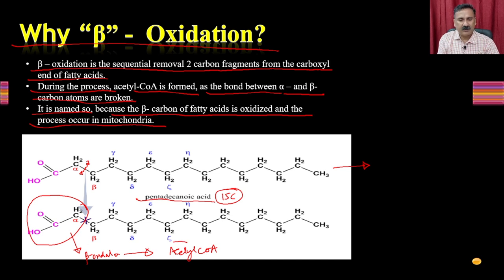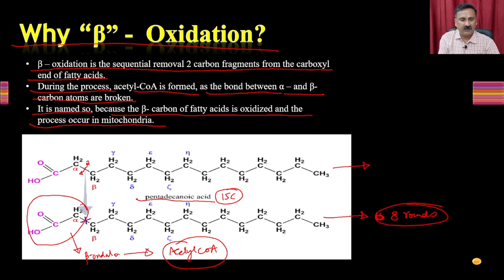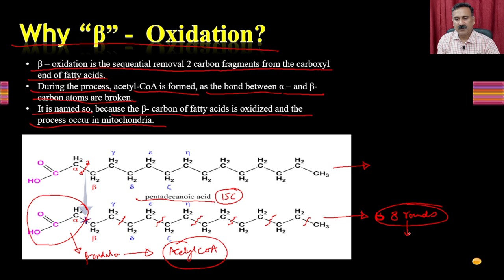Every two carbons from the fatty acid are released to produce acetyl-CoA. For a 15-carbon fatty acid, beta oxidation proceeds for eight rounds, with the bond broken sequentially along the chain until a single acetyl-CoA remains. This full oxidation produces a large quantity of energy. One major step is transporting the fatty acid into the mitochondria, since beta oxidation occurs there. The first step is fatty acid activation and transportation into the mitochondria.